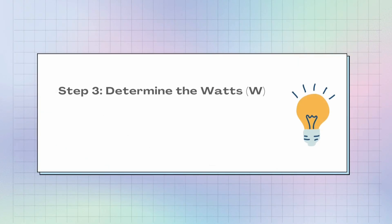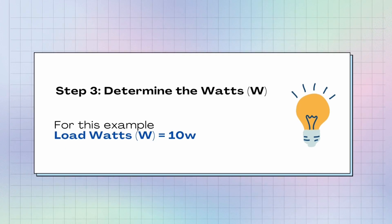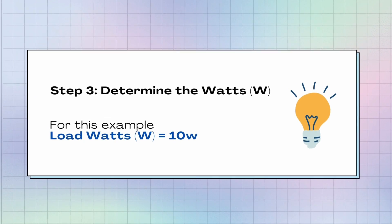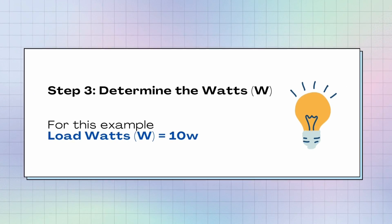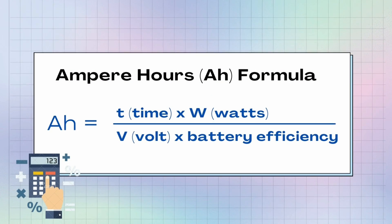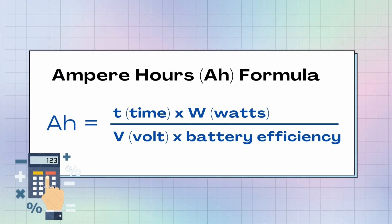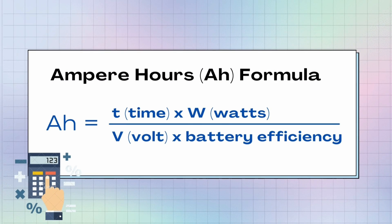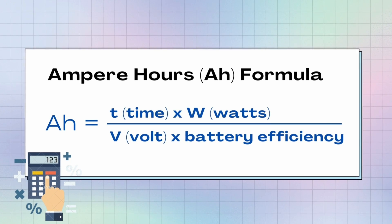For the third step, we need to determine the wattage. In this example, we will use 10 watts. We have the formula here. This formula will be used to calculate the capacity of the battery in ampere hours. To use this formula is simple: you need to multiply time by watts, then divide it by the results of voltage multiplied by battery efficiency.